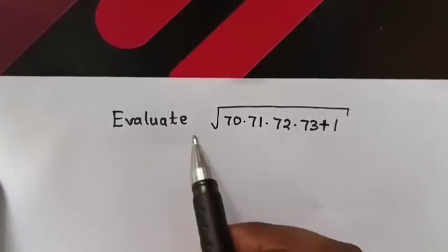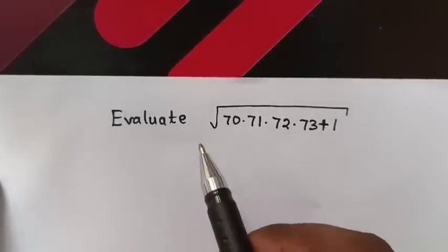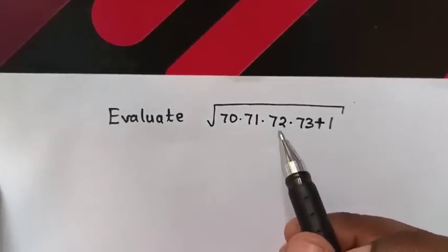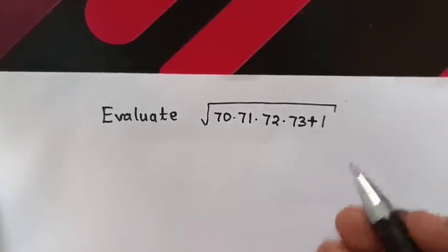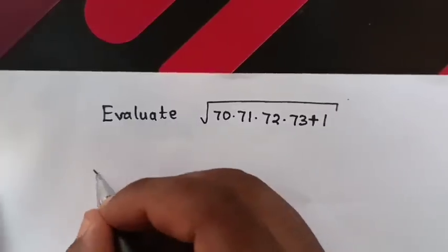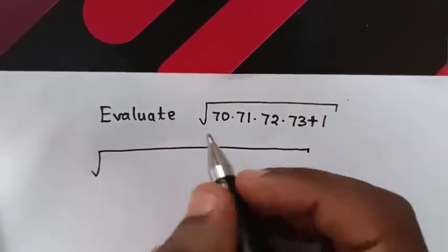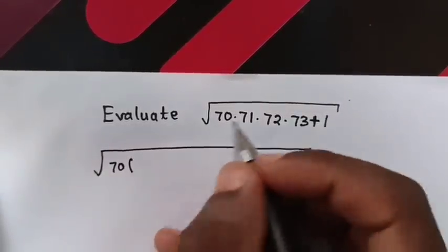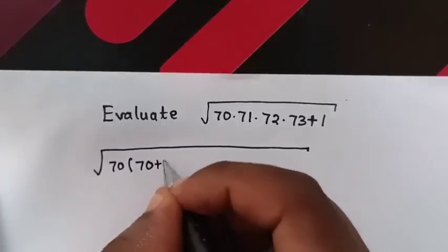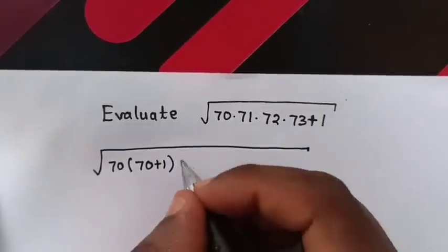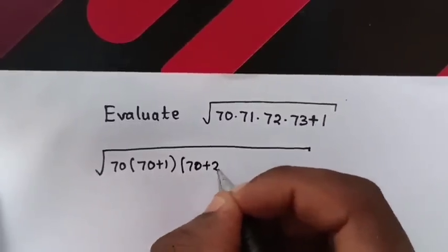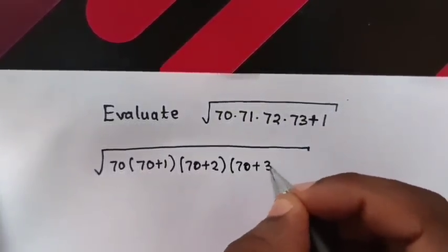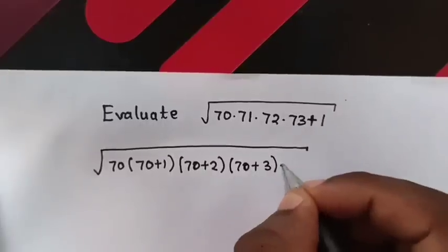Hello. How to evaluate square root of 70 times 71 times 72 times 73 plus 1. So, from this: square root of 70 times, this 71 is 70 plus 1, times 72 is 70 plus 2, times 73 is 70 plus 3, plus 1.